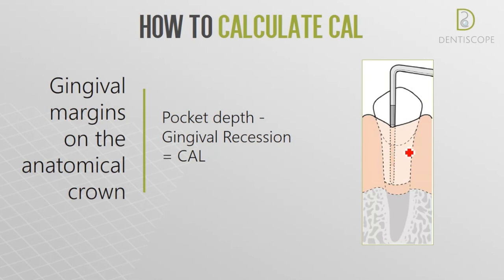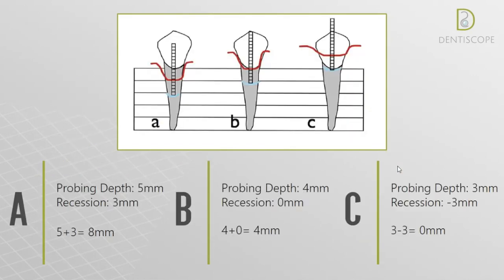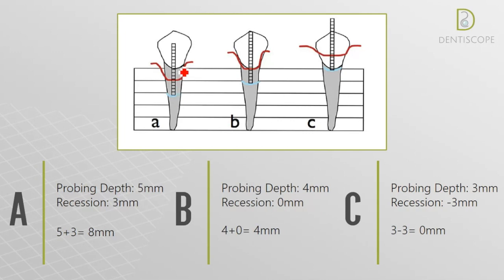Now we have three scenarios illustrating the previous explanations. The red line represents the gingival margins and the blue lines represent the junctional epithelium. In scenario A, the probing depth is five millimeters and the recession is three millimeters. We add them together and get a clinical attachment loss of eight millimeters.